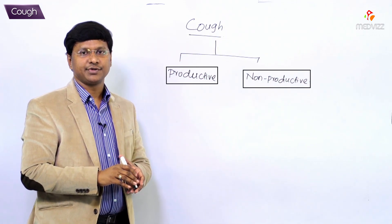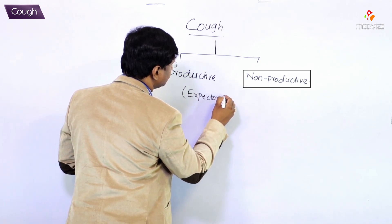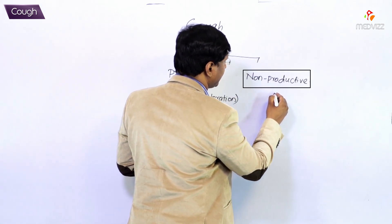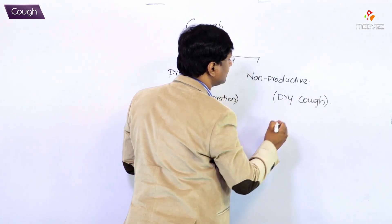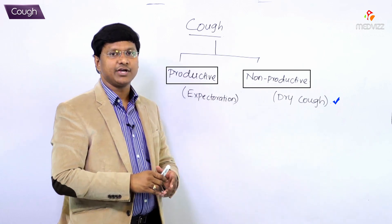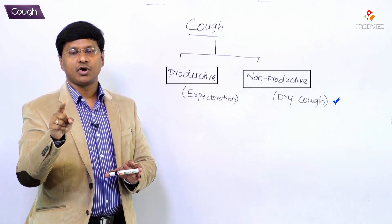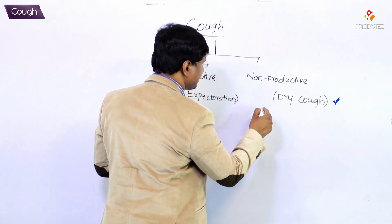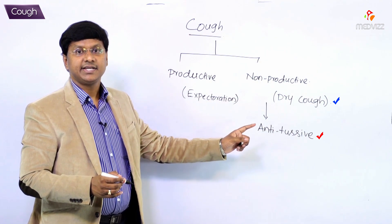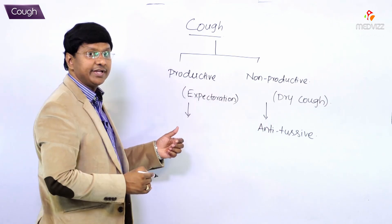Productive cough is the one where there is production of expectoration, whereas non-productive cough is the one where the individual will have dry cough. This dry cough is an unnecessary or useless cough and it should be suppressed by using anti-tussive agents.